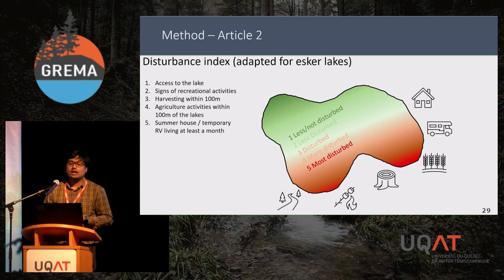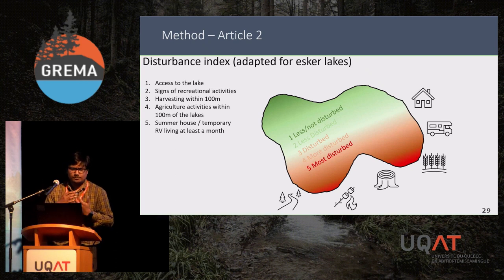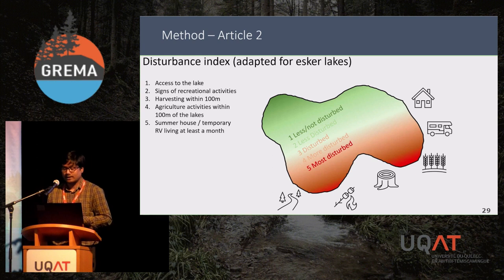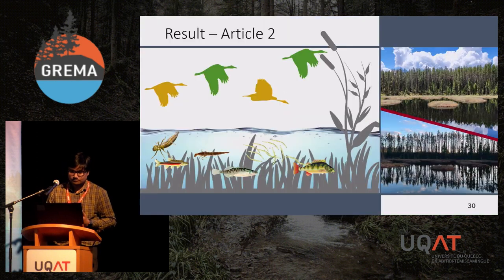For this study, we also measured a disturbance index where one means less or not disturbed and five means the most disturbed, depending on five criteria: whether the lake has access or any signs of recreational activity or harvesting within 100 meters from the lake, agriculture activity within 100 meters, or presence of a summer house or recreational vehicle staying at least a month around the lake.